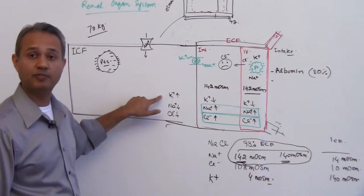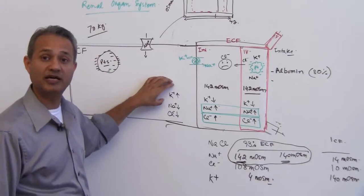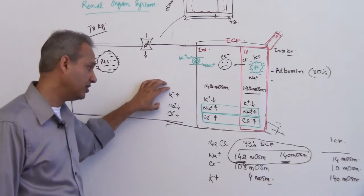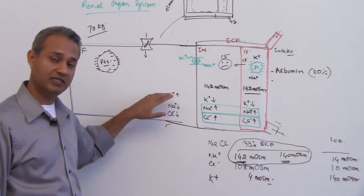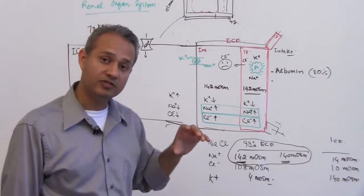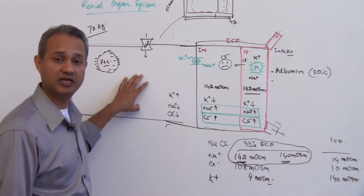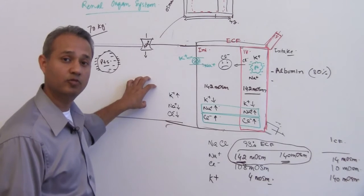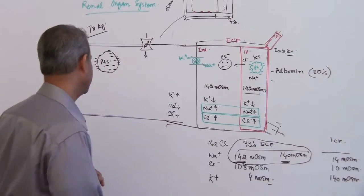Potassium has similar importance for the intracellular fluid — about 50% of the osmolarity inside the cell is contributed by potassium. So if there is a sudden potassium change, you should be thinking about what is going to happen to the environment inside the cell, because intracellular homeostasis is at play here.